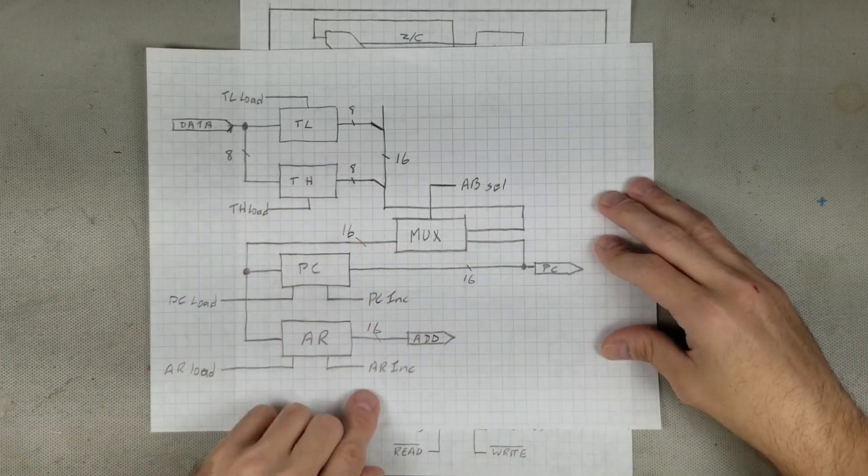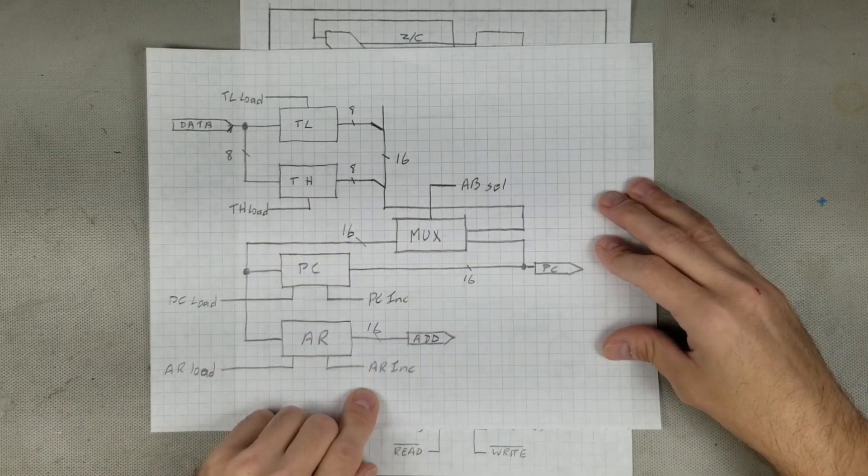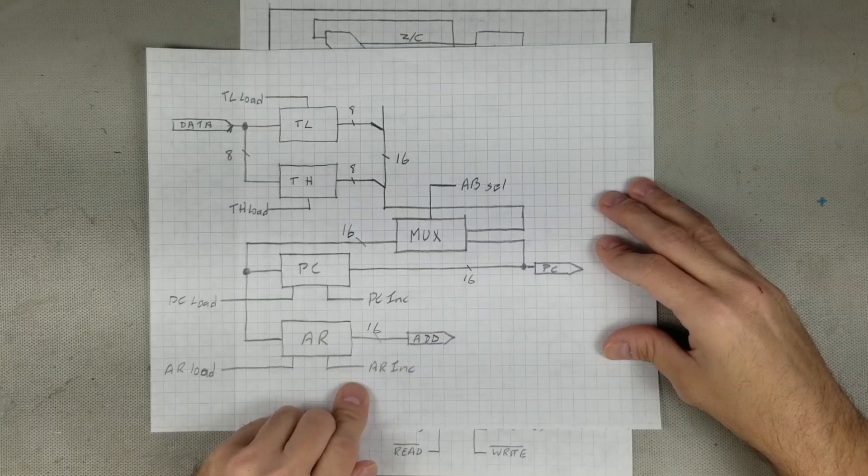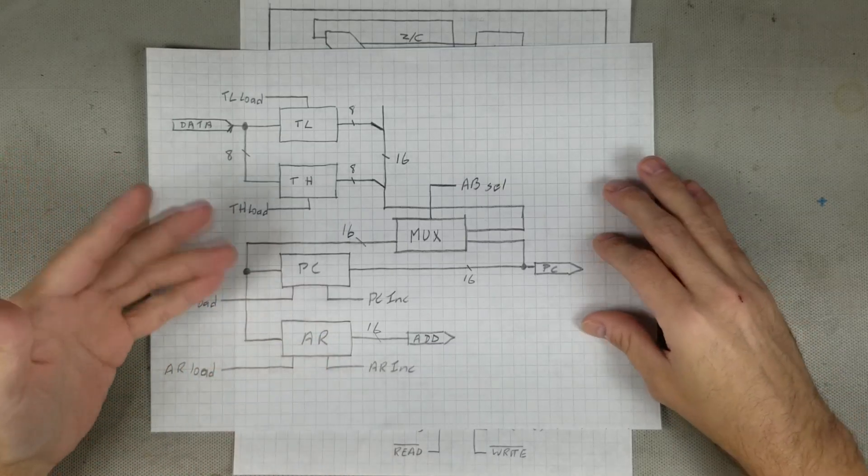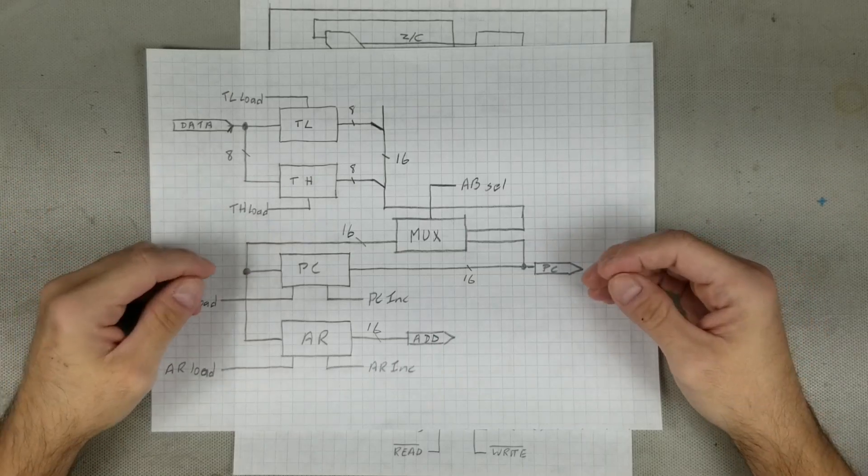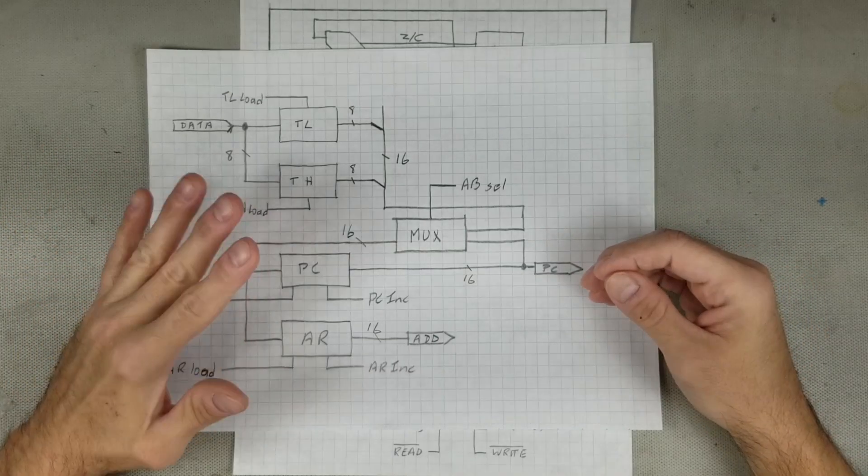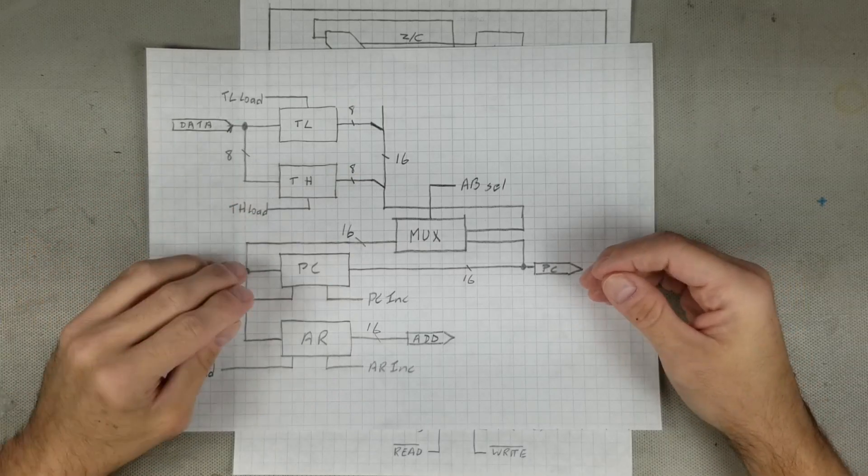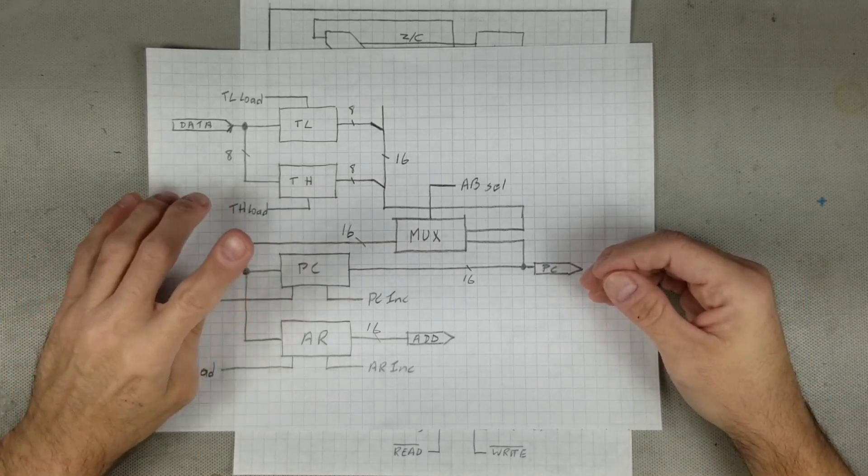One thing to note is that the address register has an AR increment line, where the original did not. Adding this will allow us to remove one of the instruction actions, saving a clock cycle, and speeding up most instructions by 25%. The small amount of logic that is added by including this is worth it for the performance increase. We'll see how in a bit.